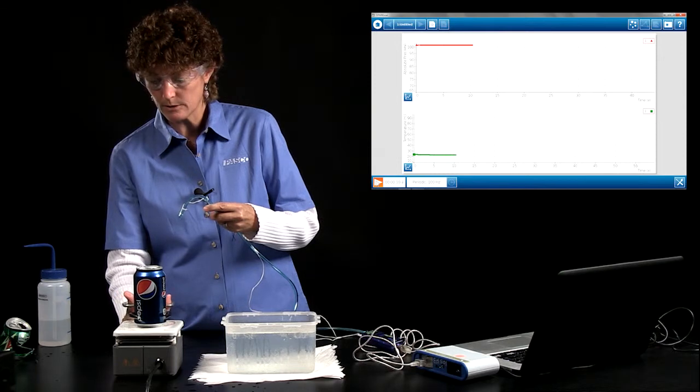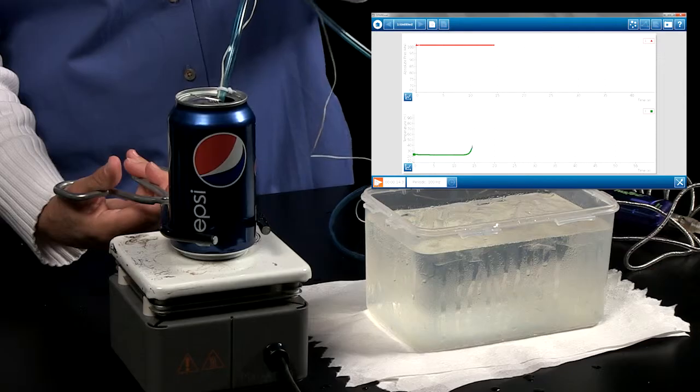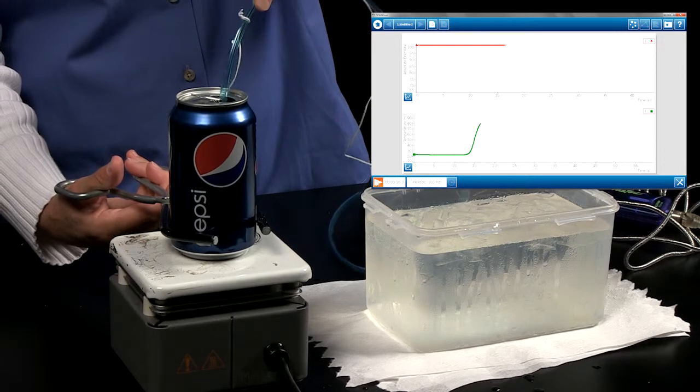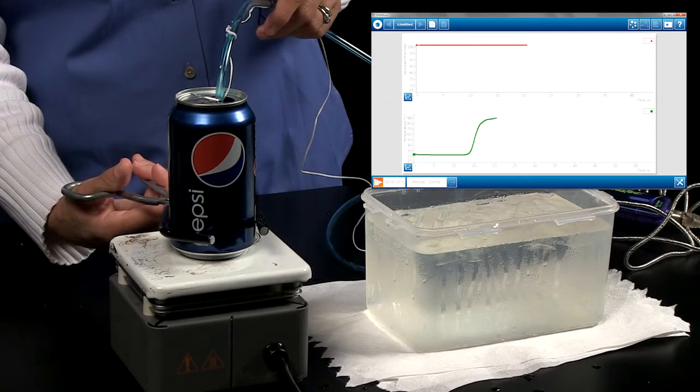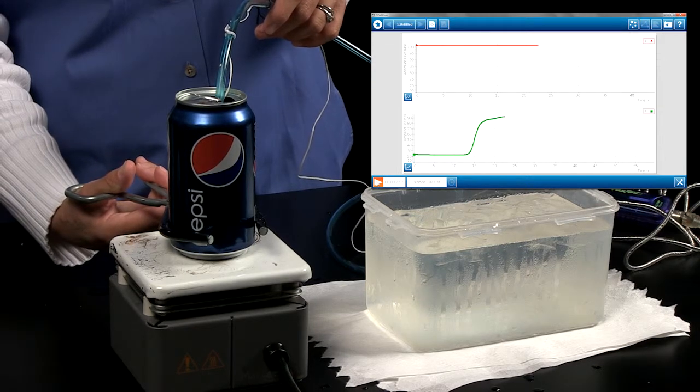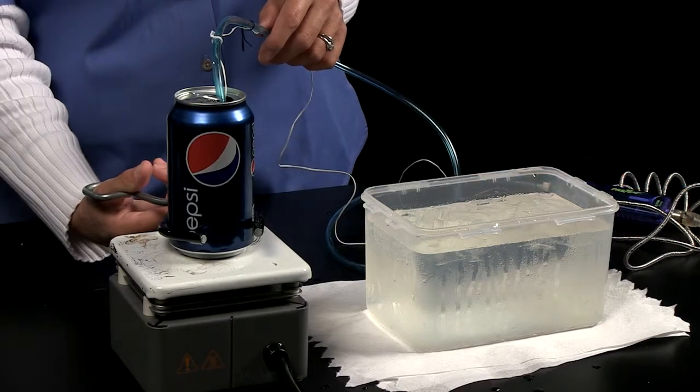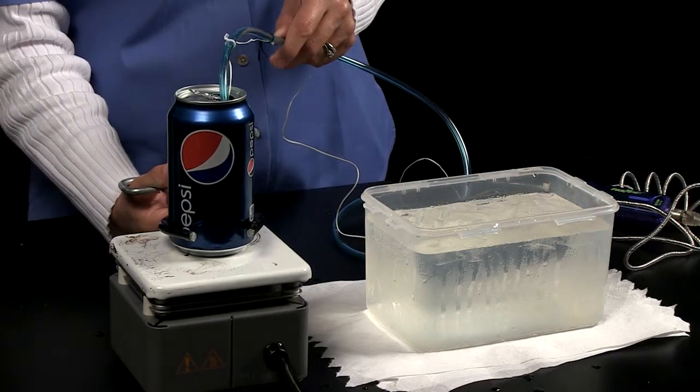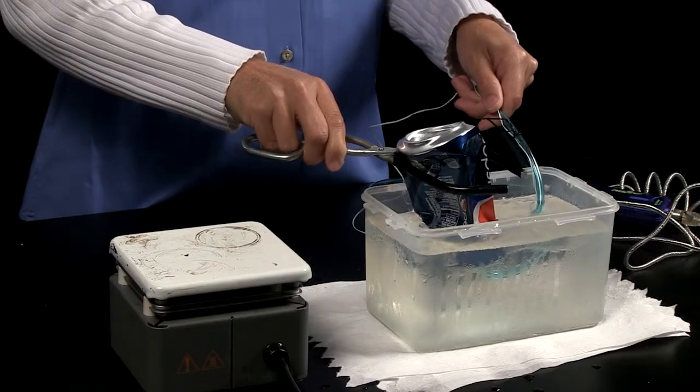So just like before, I'll go ahead and grab the can with the tongs down at the bottom, and I'll introduce the tube with the temperature sensor about two-thirds of the way down into the can. And we can see, of course, that the temperature is increasing because it's down there near some boiling water. And here we go, into the water, one, two, three. And crush.